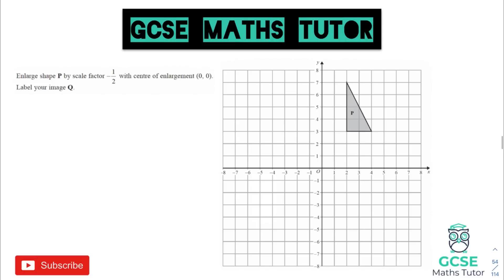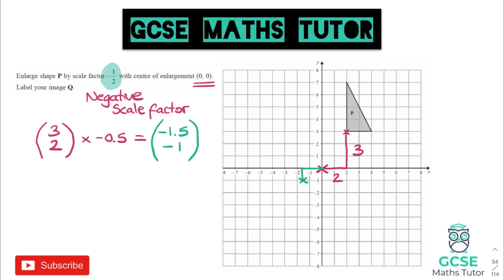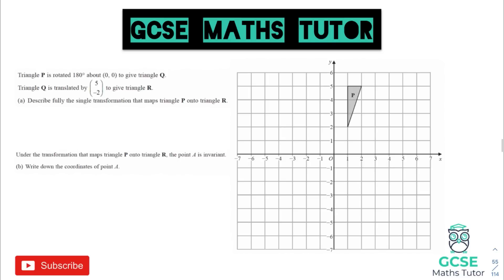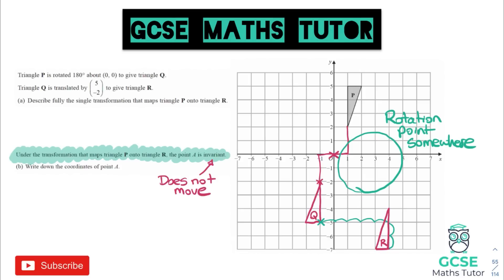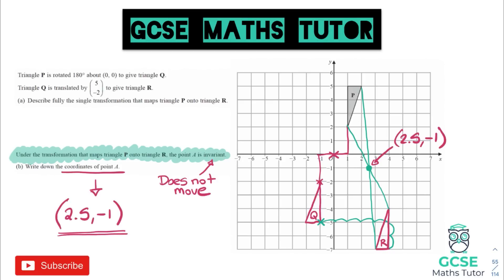For transformations with a negative scale factor: find the centre of enlargement, find the column vector to the first vertex, multiply by the scale factor, and that tells you the distance to go — these can be quite nasty with a negative scale factor. Make sure you're also happy with reflections, rotations, and translations for multiple transformation questions. If the question mentions an invariant point, that's simply a point that hasn't moved — it could be on the shape or part of a transformation such as the rotation point.